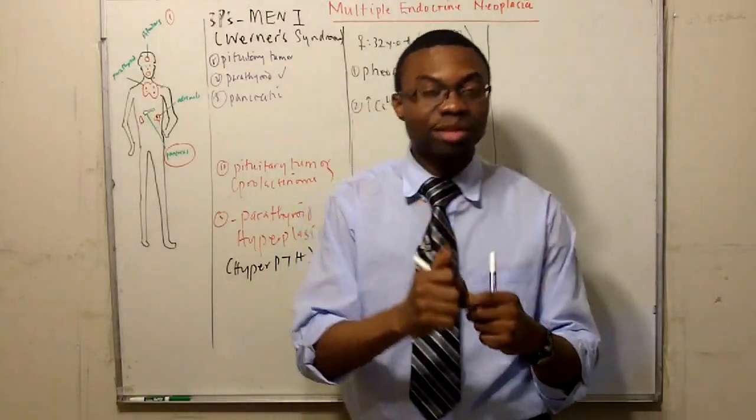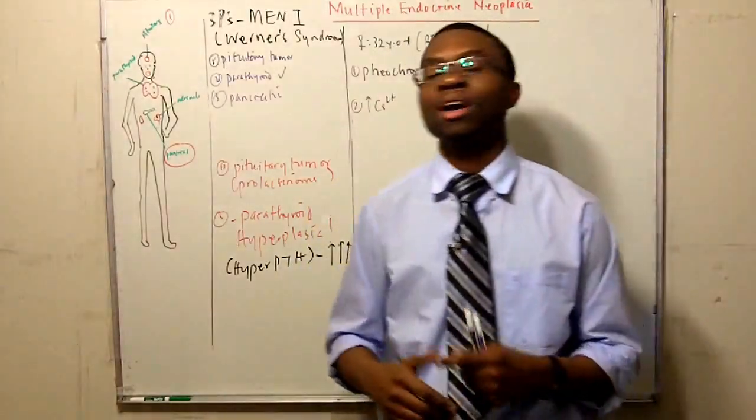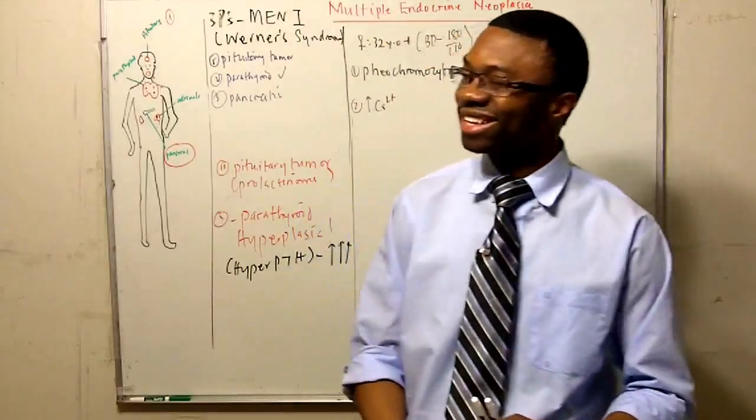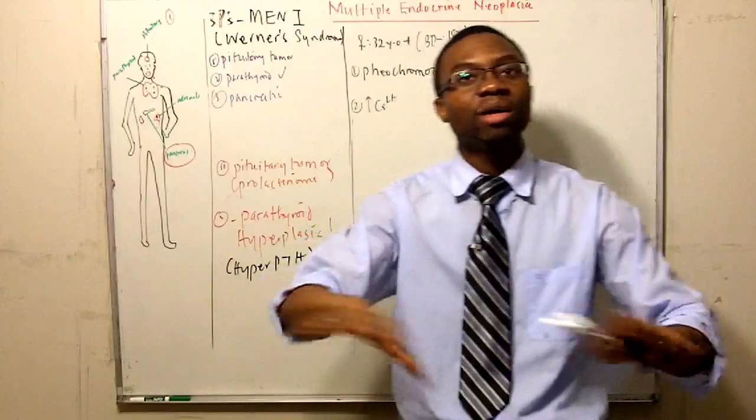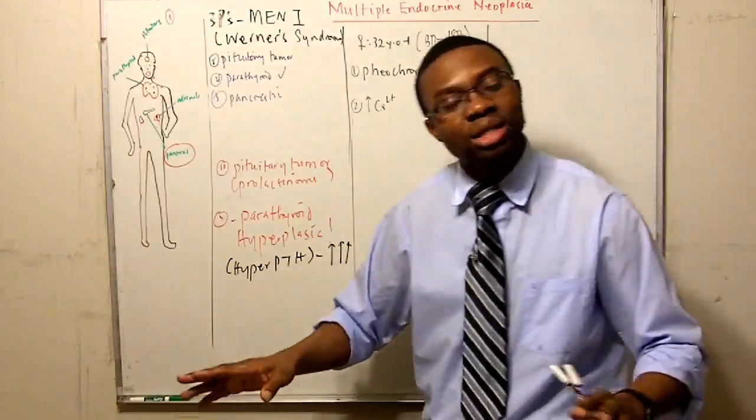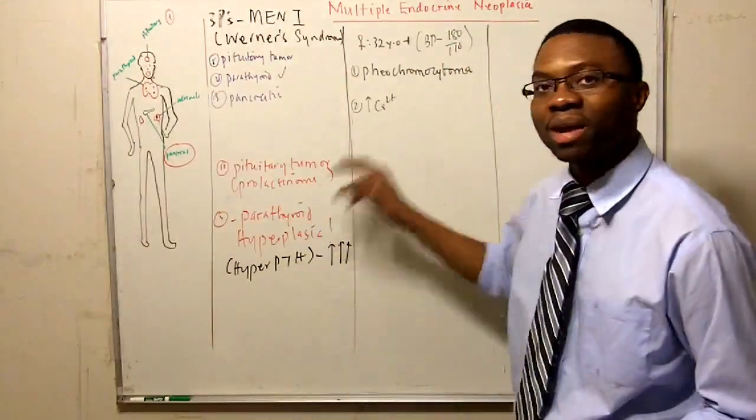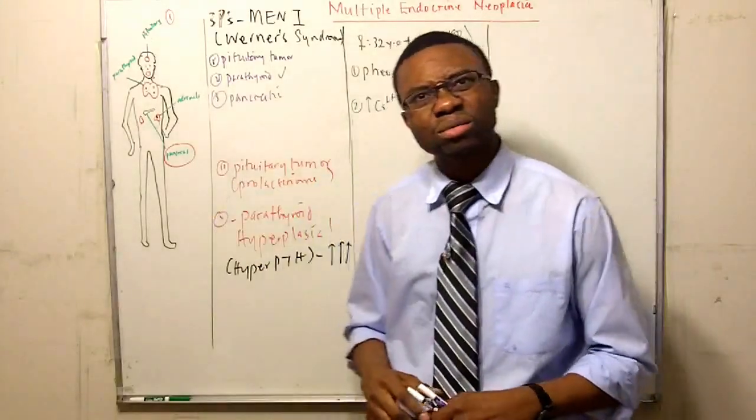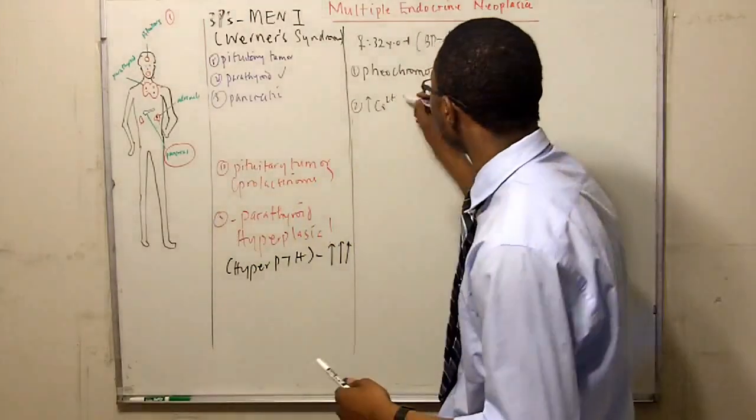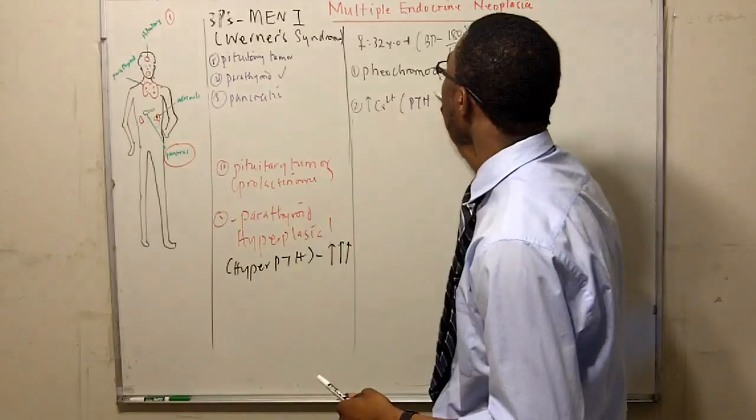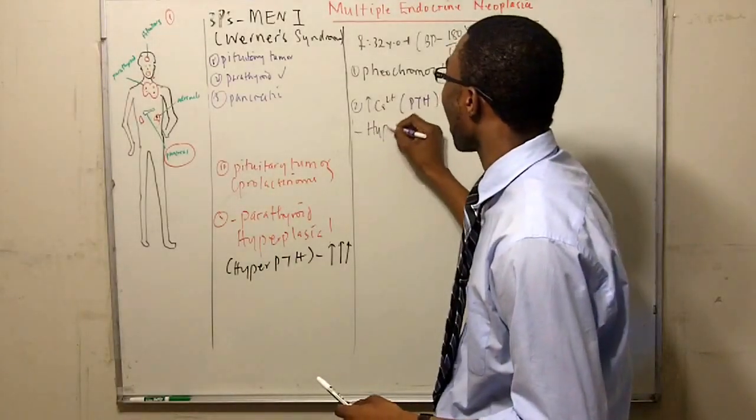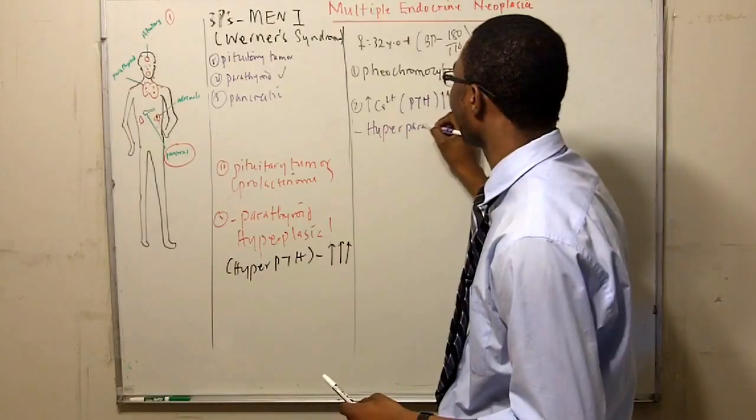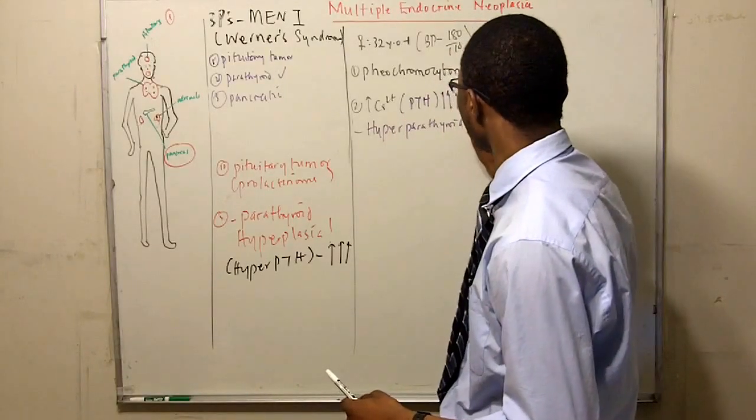And what are the two most common things of elevated hypercalcemia? Hyperparathyroidism and cancer. This is the top two. So she did not have cancer, thank goodness. But she had hypercalcemia and her phosphate level was very low. So we decided to check the PTH level and PTH was sky high. Guess what she had? She had hyperparathyroidism.